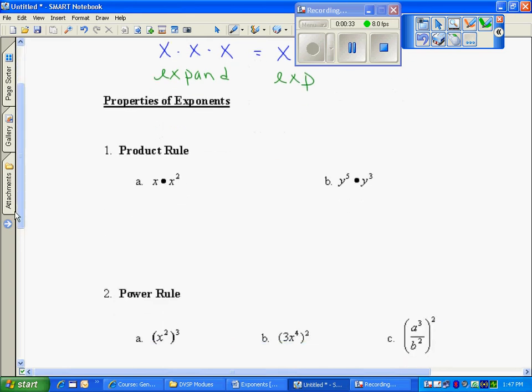If we look at the first rule, it's called the product rule. We're going to expand this problem out. Instead of writing x squared, I'm going to write x times x. Now I want to condense this in exponential form. My base is x, multiplied by itself three times.